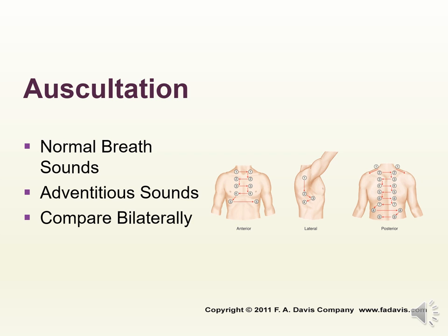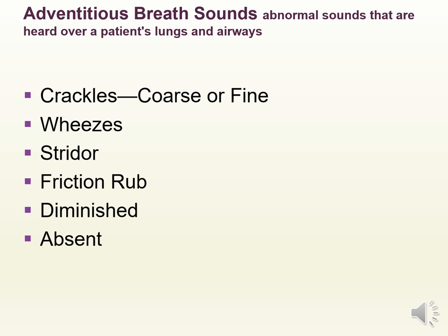Auscultate the lungs, comparing normal breath sounds versus adventitious breath sounds bilaterally. Adventitious breath sounds are abnormal sounds heard over the lungs and airway. They may be described as crackles, wheezes, stridor, rubs, or diminished/absent breath sounds. Stridor typically indicates an obstruction and is sometimes described as a crowing-like sound. Diminished or absent breath sounds are often heard in pneumothorax and may represent no airflow through the lungs.